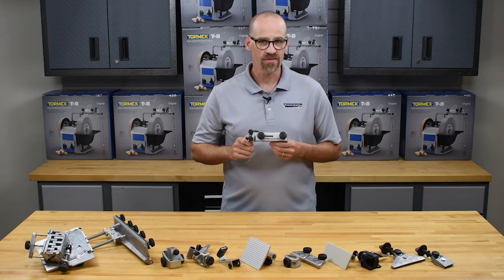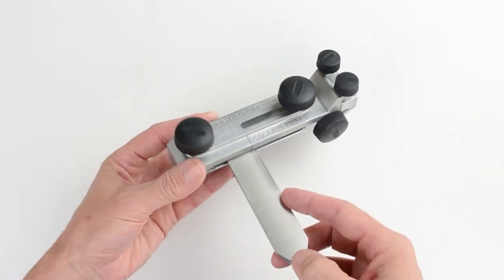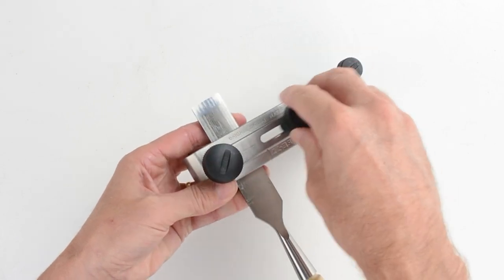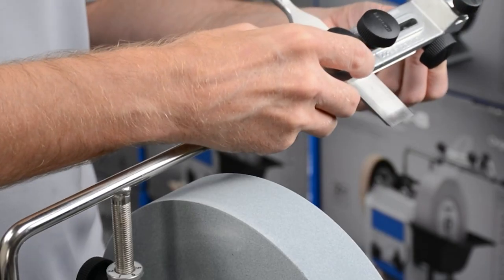The SE-77 square edge jig does chisels and hand plane blades up to three inches wide. Keep the tool edge against the clamp shoulder. Two to three inches should extend beyond the clamp. Tighten the knobs evenly.